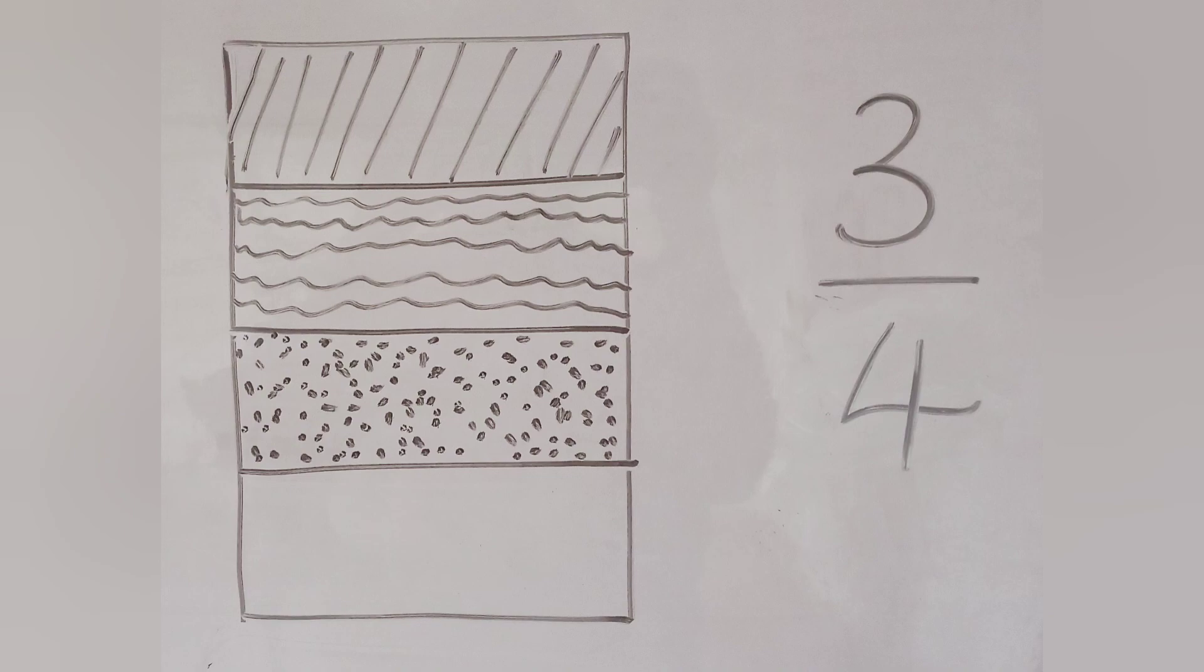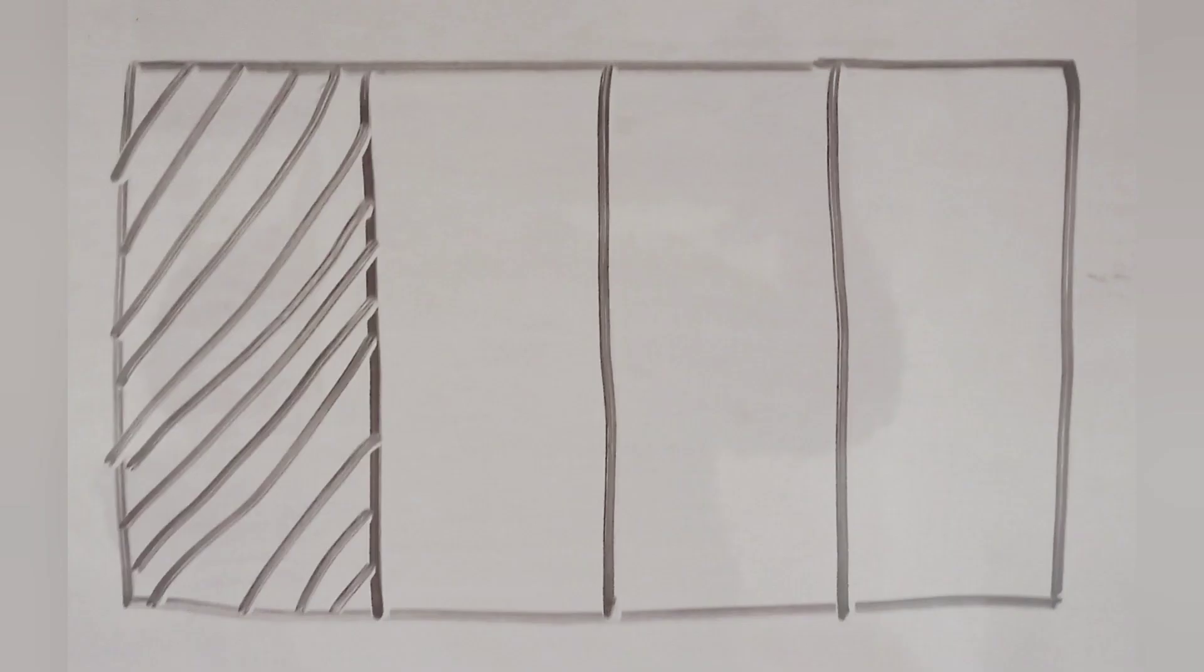All right, let's see if you can do this by yourself. Can you tell the fraction of these shapes that are shaded? The first one is a rectangle with 4 different parts. Out of the 4 parts, 1 part is shaded. Can you tell what fraction of the rectangle is shaded?